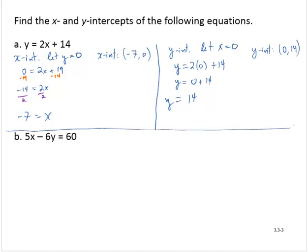For 5x minus 6y equals 60, again, let's start with the x-intercept. And we will let y take the value 0.